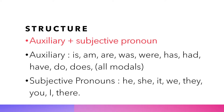The structure of a tag is auxiliary followed by a subjective pronoun. Auxiliary consists of: is, am, are, was, were, has, had, have, do, does, and all modals such as will, can, shall, etc. Subjective pronouns consist of: he, she, it, we, they, you, I, and there.